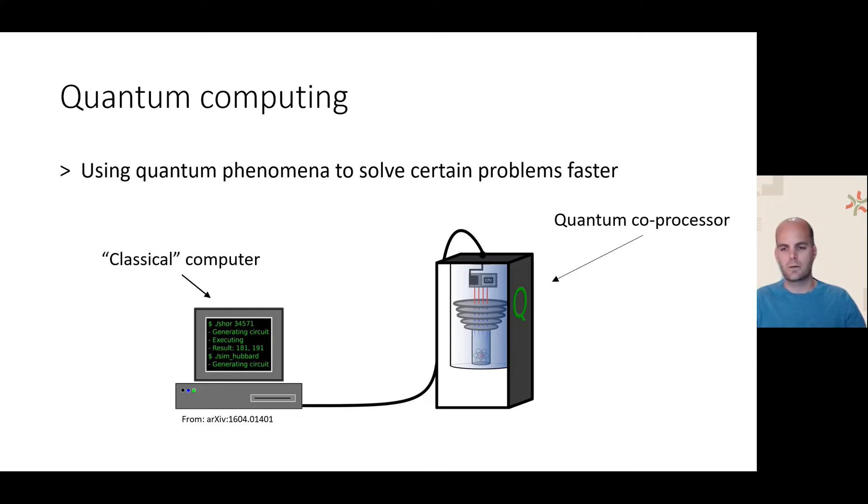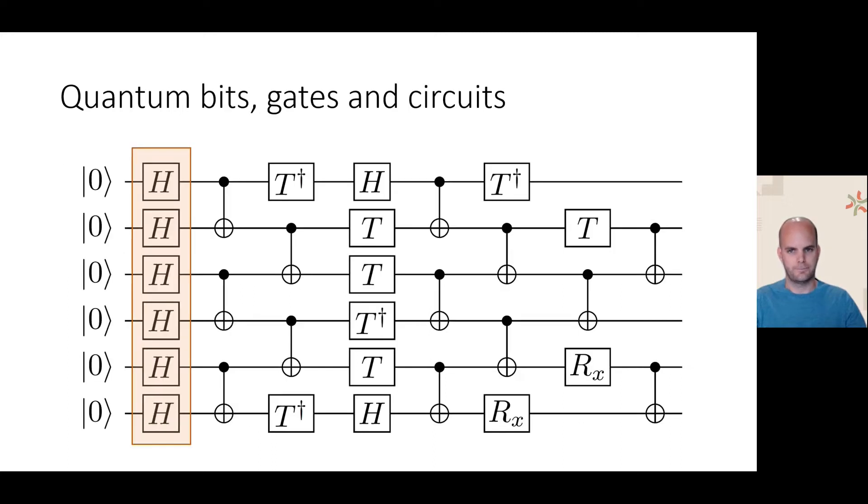We can write these sequences of quantum instructions as quantum circuits, similar to this one. Here, each horizontal line corresponds to a quantum bit, with time moving from left to right. For example, in the first cycle, the quantum coprocessor would apply a Hadamard gate, denoted by a box labeled with an H, to all six qubits. And in the next cycle, we would apply a few two-qubit gates. These are called CNOT gates, or controlled NOT gates.